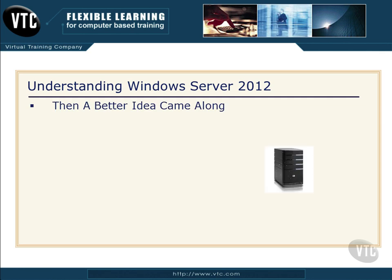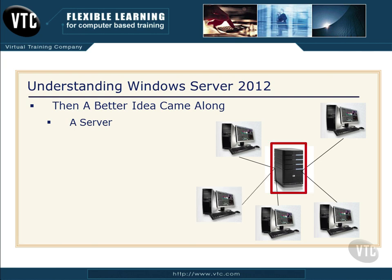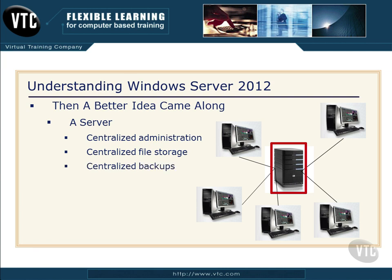Then a better idea came along — a server. The idea was to create a machine dedicated to connecting all these machines together, and it can handle certain administrative functions like centralized administration: handle administration in one place, do it once, and it'll affect everybody. Centralized file storage — instead of storing files on every individual machine, put all those files on the server and share them as needed. Centralized backups — do backups on one machine and we don't lose our data. Centralized security — handle all the security issues right here on the server.